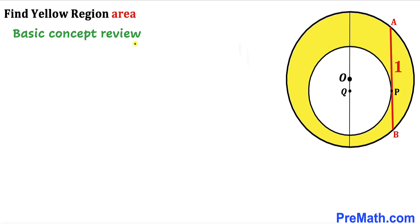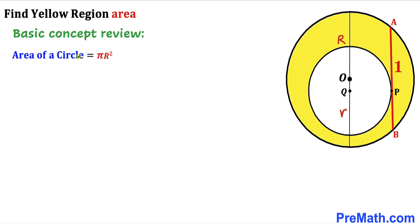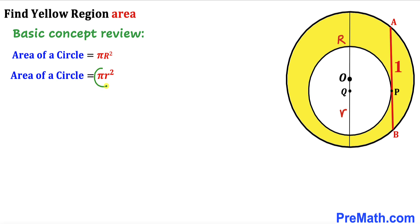Let's get started. Before we proceed, let me go over the basic concepts. We are dealing with two circles of different radii. The center of the larger circle is O, and let's assume its radius is uppercase R. The center of the smaller white circle is Q, and let's assume its radius is lowercase r. The area of the larger circle is π R², and the area of the smaller white circle is π r².